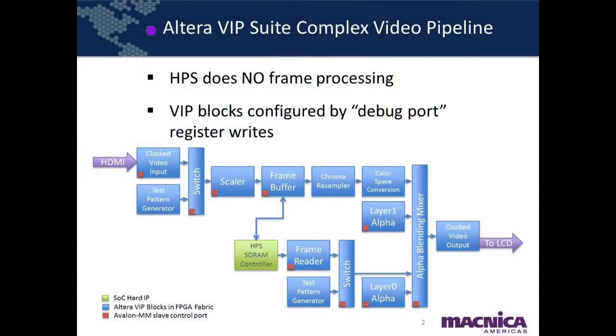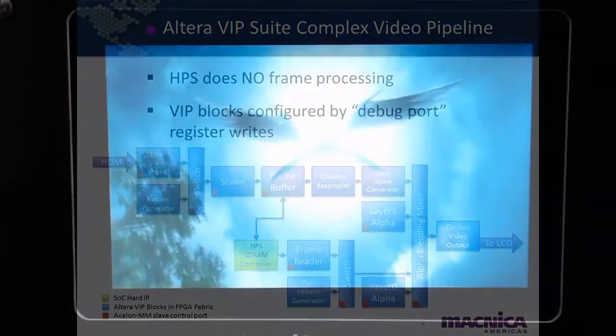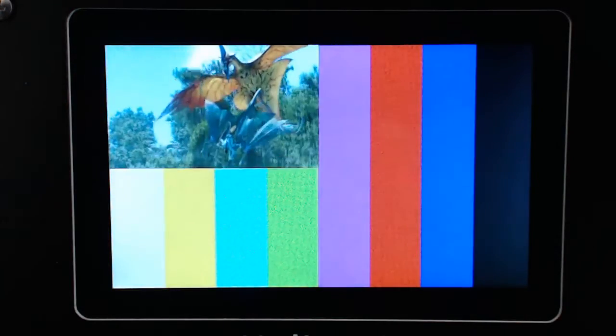Next, let's look at hardware processing of a live high-definition video stream using the Altera Video IP Suite. Here, the heavy lifting of processing the HDMI input video stream is being handled by FPGA resident video IP blocks. The Altera Video IP Suite can provide scaling, video mixing, also known as picture-in-picture, alpha blending, as well as many other critical graphics processing functions.